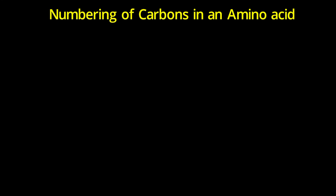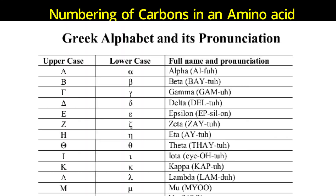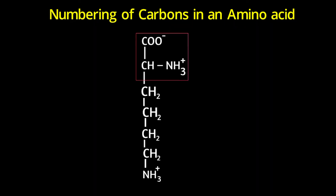Carbons in amino acids are numbered using Greek letters. The first carbon — bonded to both the amino group and the carboxyl group — is called alpha. The rest follow as beta, gamma, delta, epsilon. For instance, in lysine, the extra amino group is bonded to the epsilon carbon, so you denote that position as epsilon in lysine.